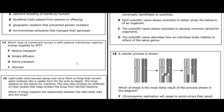Question fourteen: which type of movement across the cell's plasma membrane requires energy supplied by ATP? Passive transport is called passive because it doesn't need energy. Simple diffusion also requires no ATP. Osmosis is a type of passive transport. The only one that requires energy is active transport — that is the correct answer — because it moves substances against a concentration gradient.